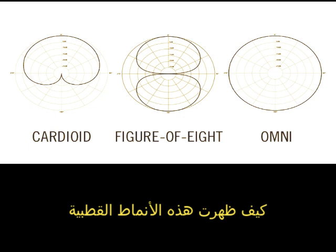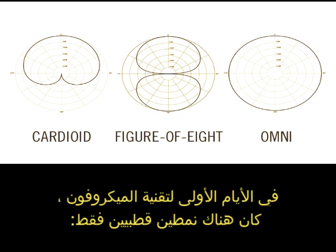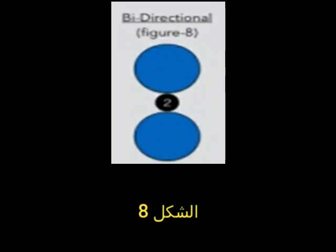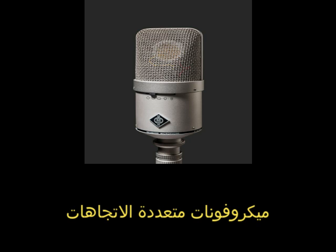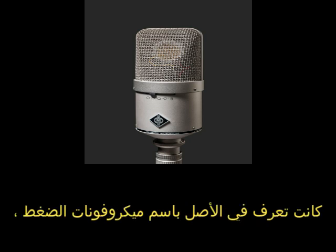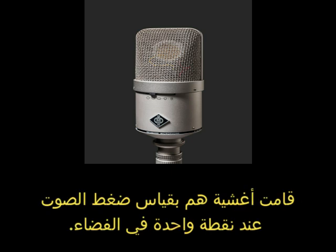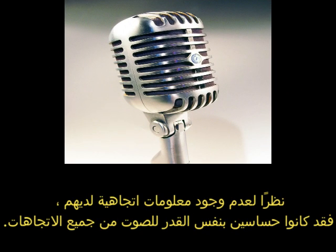In the earliest days of microphone technology, there were only two polar patterns: omnidirectional and figure eight. Omnidirectional mics, originally known as pressure microphones, had diaphragms that measured sound pressure at a single point in space. Because they had no directional information, they were equally sensitive to sound from all directions.